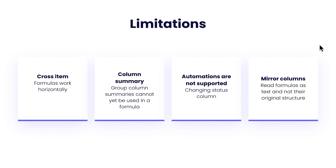Next up, we have formula column limitations. First and foremost, cross-item formulas only work horizontally at this time. We also have a limitation regarding column summary — the group column summaries cannot yet be used in a formula. We also do not yet have the ability to use or map out automations when referring to the formula column. So for example, if you're hoping to change a status column based on the output of a formula, that's not yet supported.